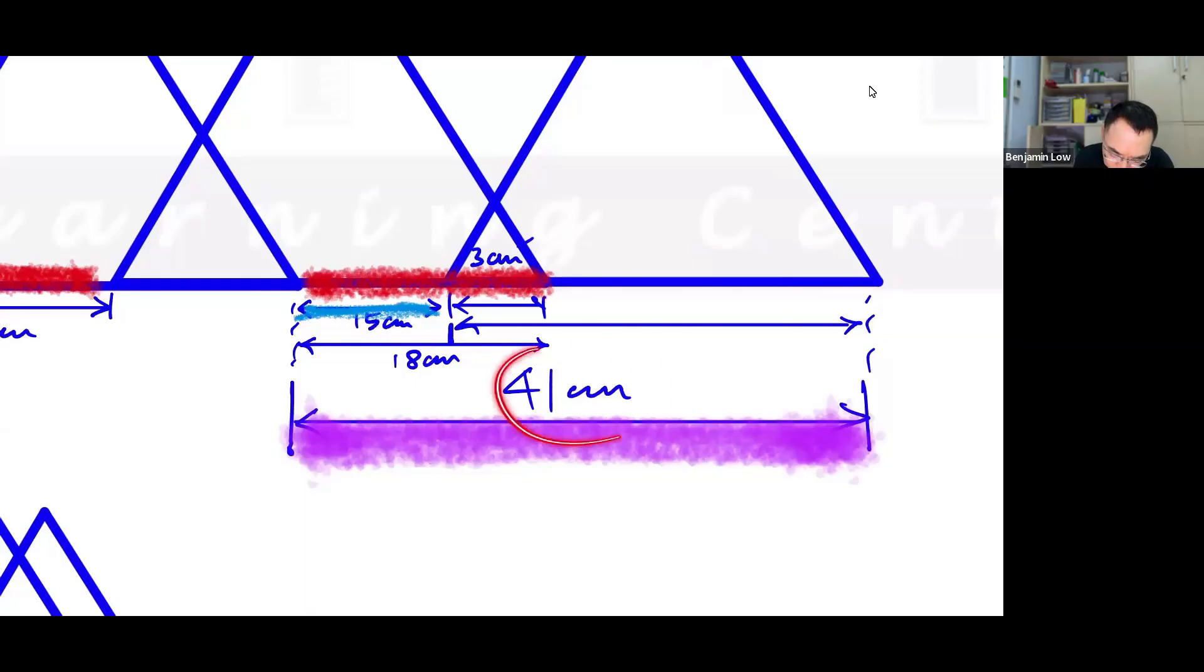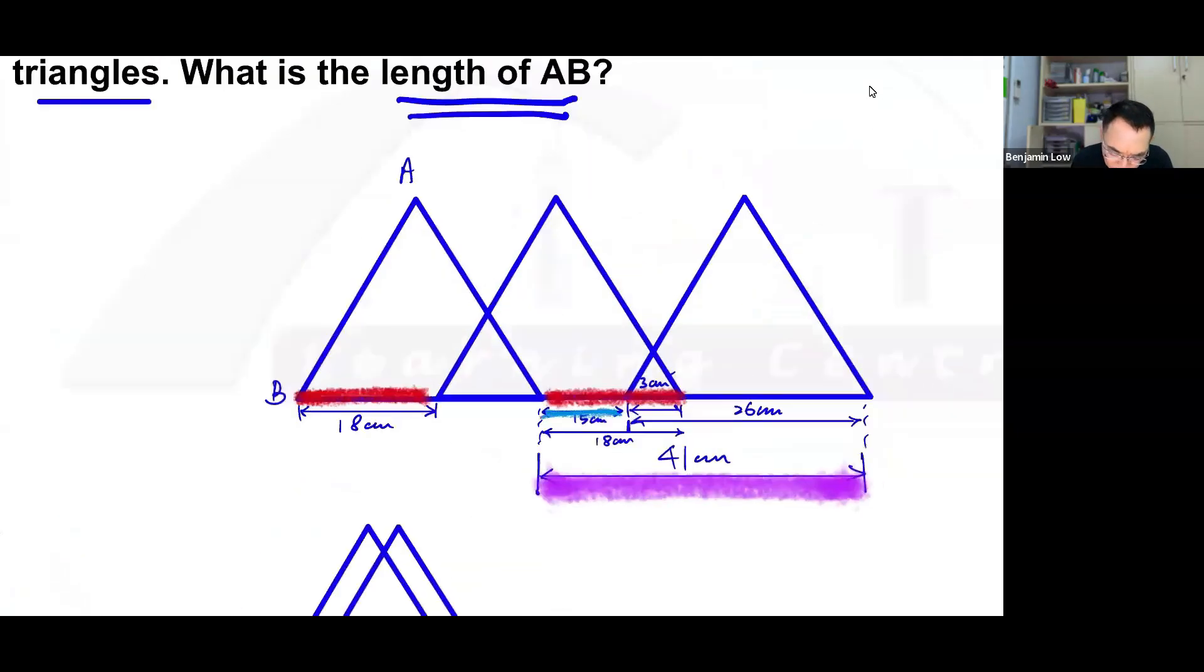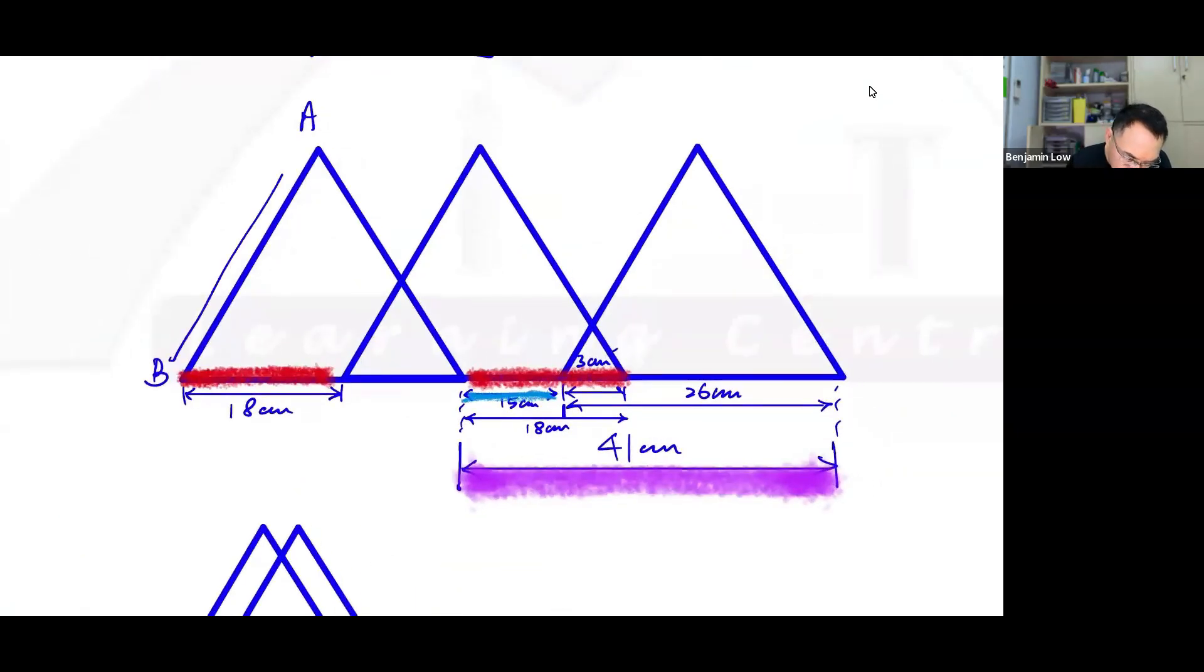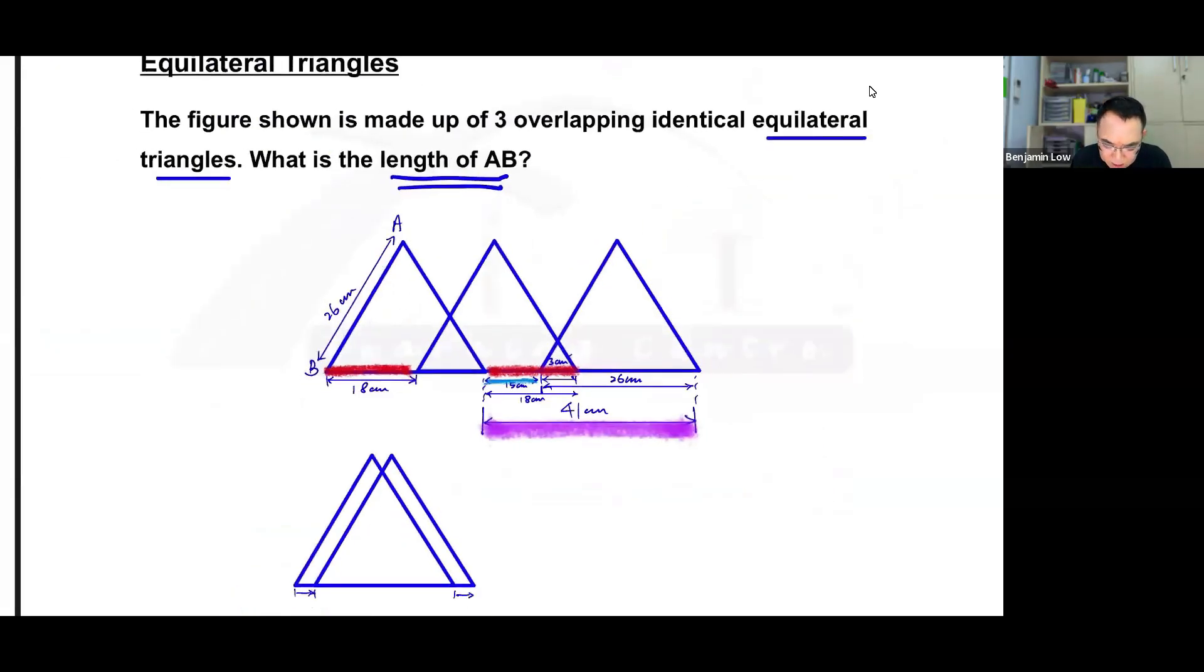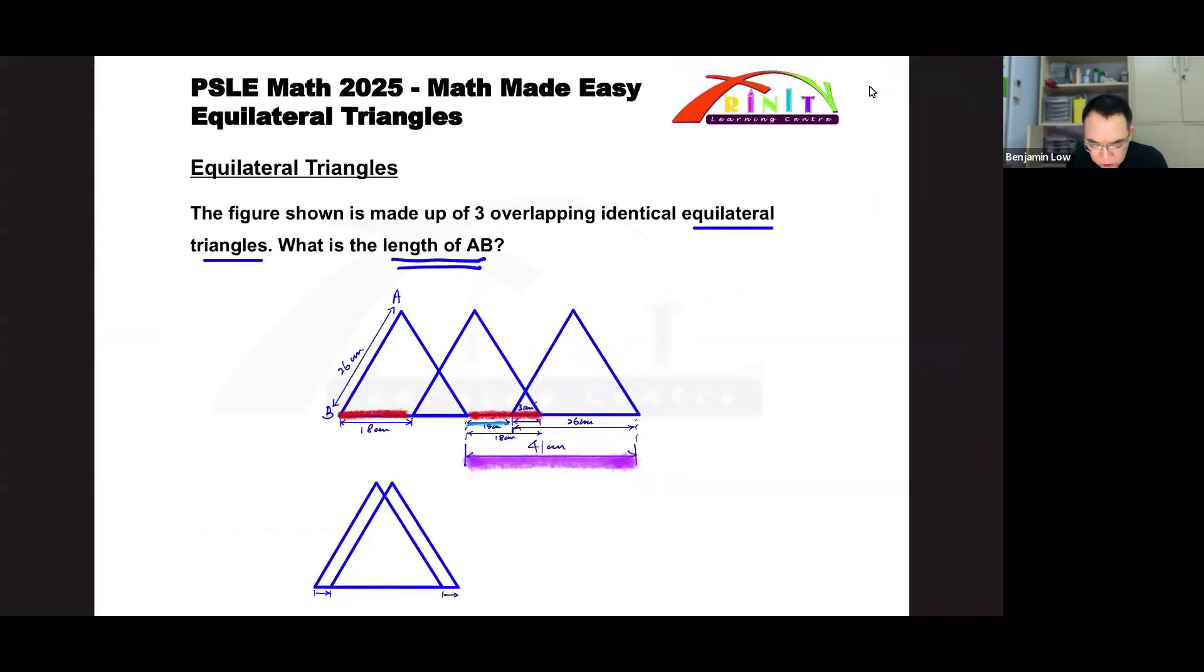So if I take 41 minus 15, I'll be getting this, and the answer for that is 26. Therefore, the answer to this question is 26. Why is that? Well, if this is 26, and these are all equilateral triangles, then this should also be the same length. And since the question is, what is the length of AB, then I've already answered the question, and the answer is 26.